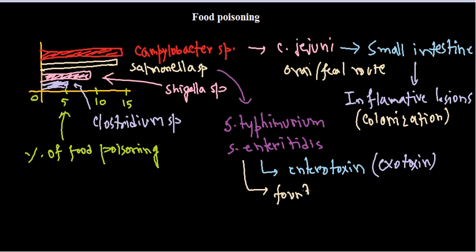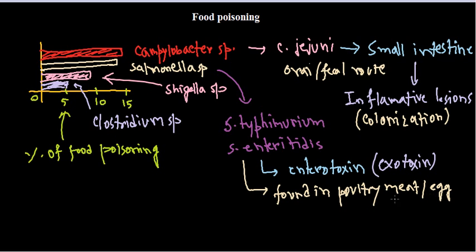Salmonella species are usually found in unprocessed or uncooked food, particularly poultry meat and eggs. If this meat or eggs are contaminated, the bacteria can colonize inside our body. You need to be very careful — eating uncooked food is a very alarming situation, so you should always cook food properly before eating it.